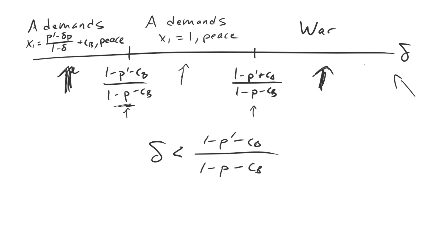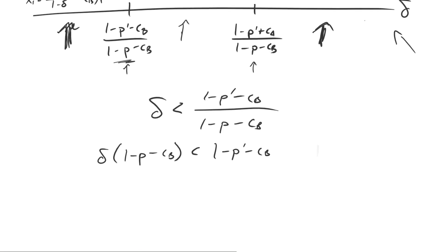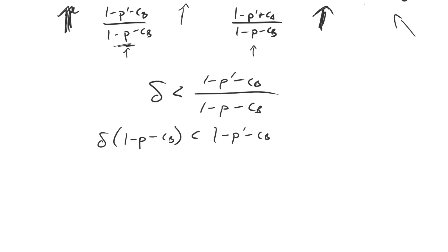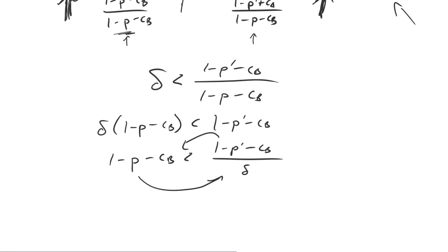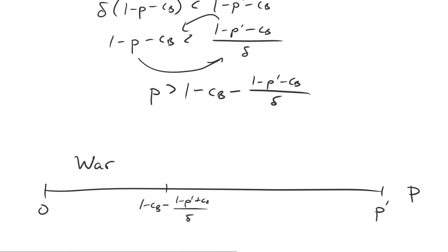So to do that, let's go ahead and multiply both sides by the denominator. 1 minus p minus c_b less than 1 minus p prime minus c_b. And what now? Well, we divide off the delta. We get 1 minus p minus c_b less than 1 minus p prime minus c_b divided by delta. And then to solve for p, we'll just move the p over and then this to the other side. And so we get p greater than 1 minus c_b minus 1 minus p prime minus c_b divided by delta. Go ahead and stick that in right here. 1 minus c_b minus 1 minus p prime minus c_b divided by delta.